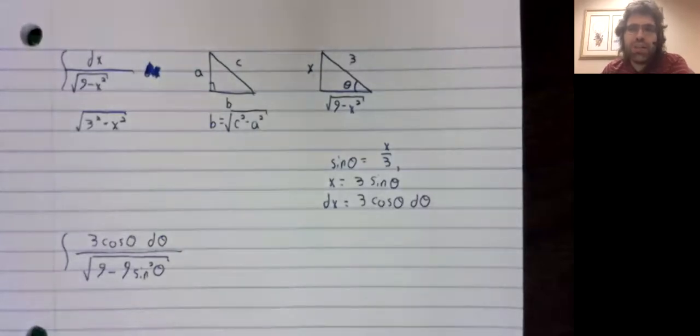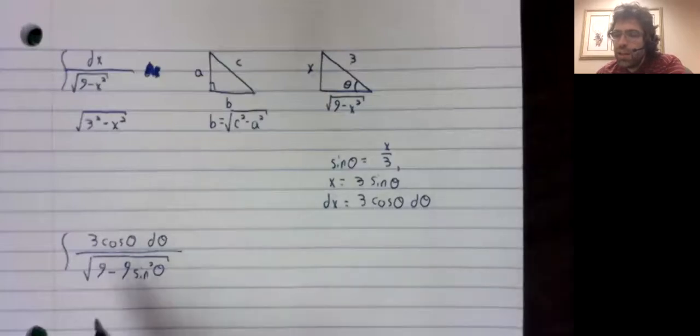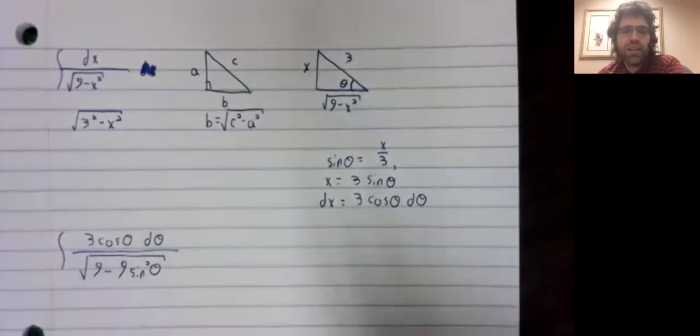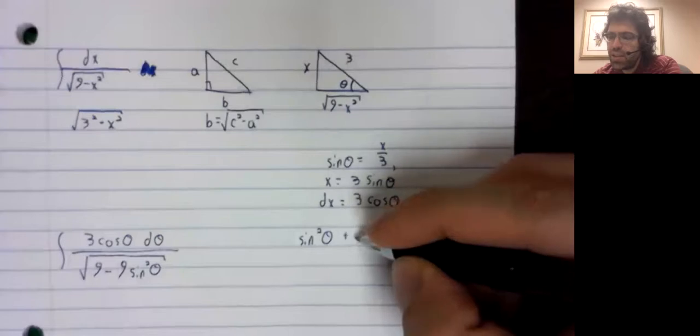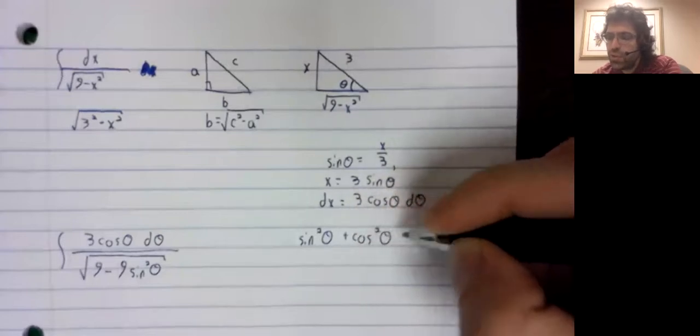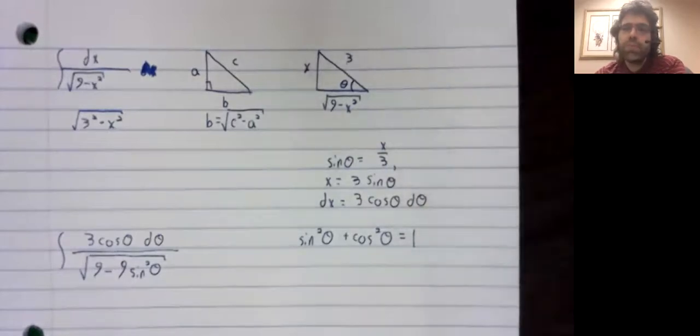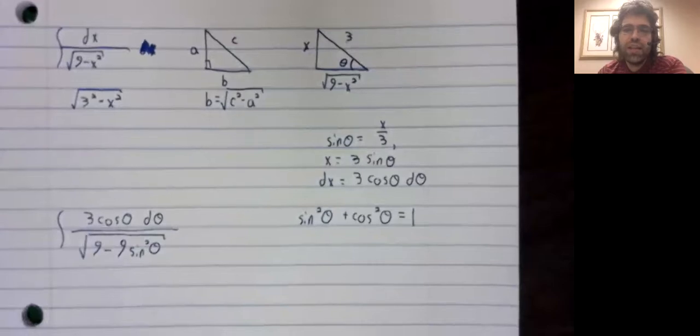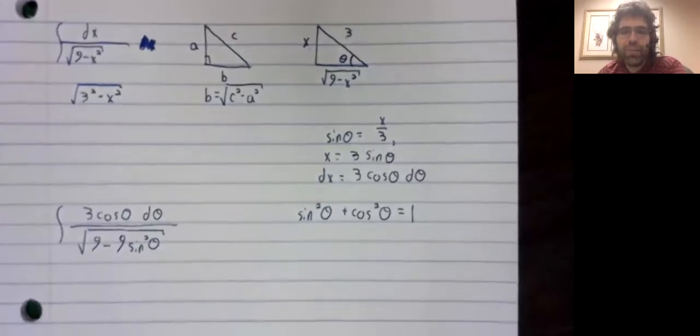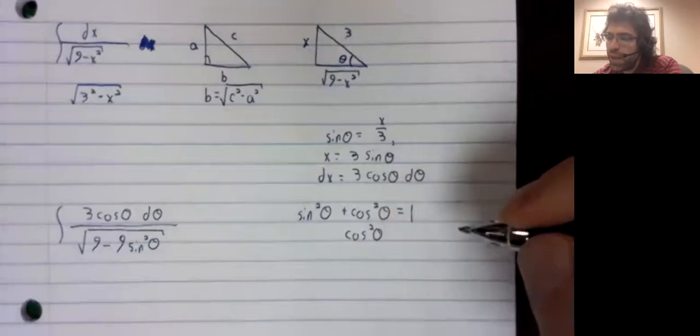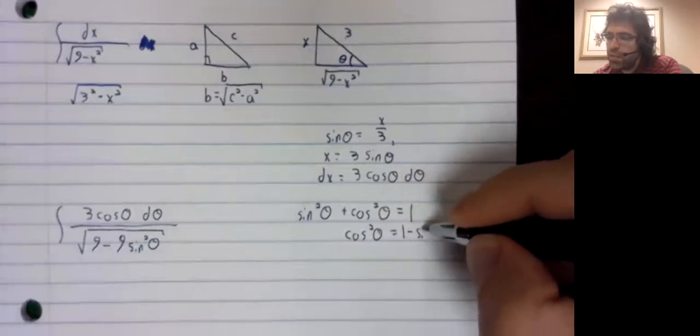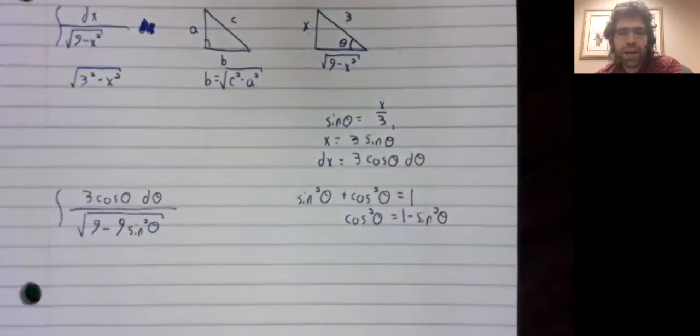Nevertheless, I am here to tell you that this does sometimes work. In particular, we can simplify this square root significantly. If you have not memorized the Pythagorean identity, you need to. This is just one of the fundamental pieces of knowledge that any math major should have. And we can rewrite it as the cosine squared of theta is one minus the sine squared of theta.